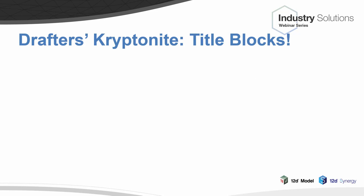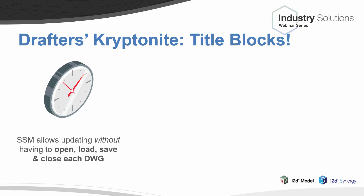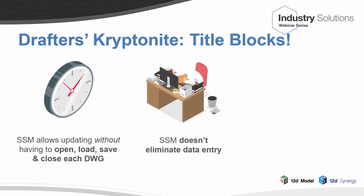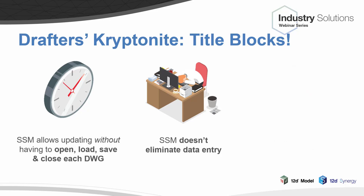I'm going to start with something that all drafters universally loathe above all else - title block data entry. Title blocks are a major pain. It doesn't matter if you're using Sheet Set Manager, it's still really painful. They're time consuming, tedious, error prone, and yet they're a super important aspect of drafting that you need to get 100% correct. In Sheet Set Manager, you can update your title blocks without having to open, load, save and close every single DWG file and layout, which is a good time saving. The problem is that Sheet Set Manager doesn't eliminate the data entry - title blocks are still a very manual and very risky process.